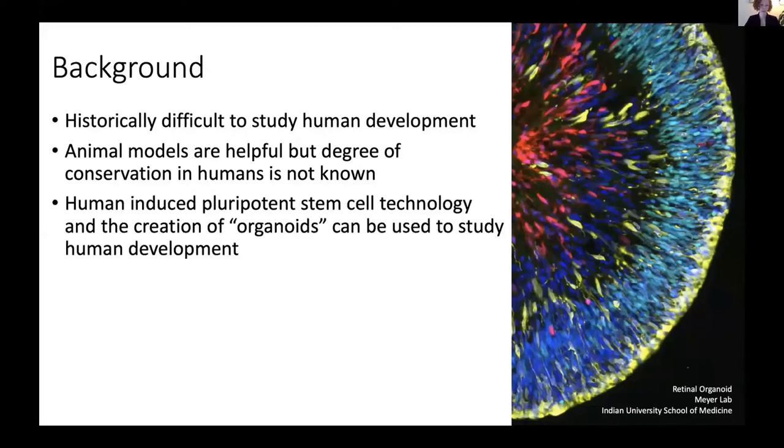However, with the advent of human-induced pluripotent stem cell technology and the creation of organoids, some of these questions can now be answered. Organoids are 3D tissues derived from stem cells grown in suspension that are directed to follow a certain developmental pathway to become different tissues or organs.